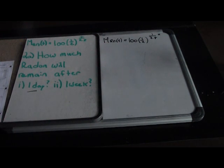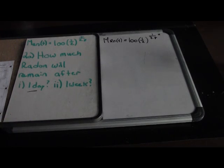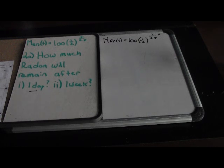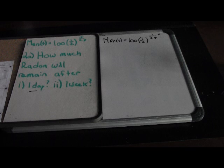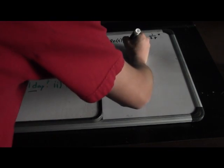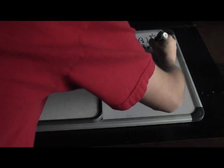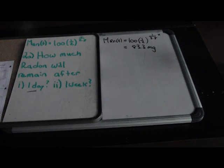The 1 represents the t value of one day. Using order of operations, you do (1/2)^(1/3.8) first and then multiply by 100. Solving that gives a mass of radon after one day of 83.3 milligrams. Our initial value was 100 mg, and after one day we have 83.3 mg, proving the function is decaying.